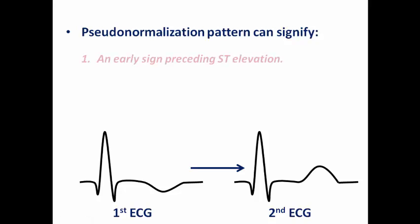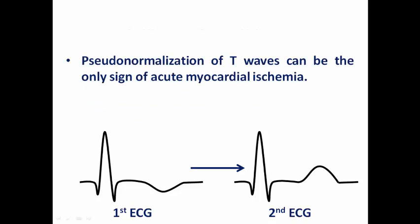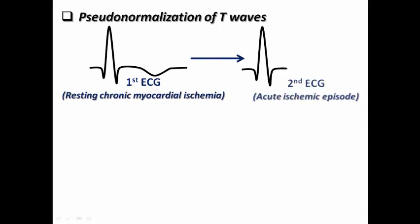They related this not just to subendocardial ischemia but even to transmural ischemia. So T wave inversion becoming positive in the lateral leads is related to lateral ischemia. Pseudonormalization pattern can signify an early sign preceding ST elevation, coronary vasospasm, and sometimes may occur in an asymptomatic patient, but in most cases signifies acute myocardial ischemia. So pseudonormalization may sometimes be the only sign of acute myocardial ischemia.